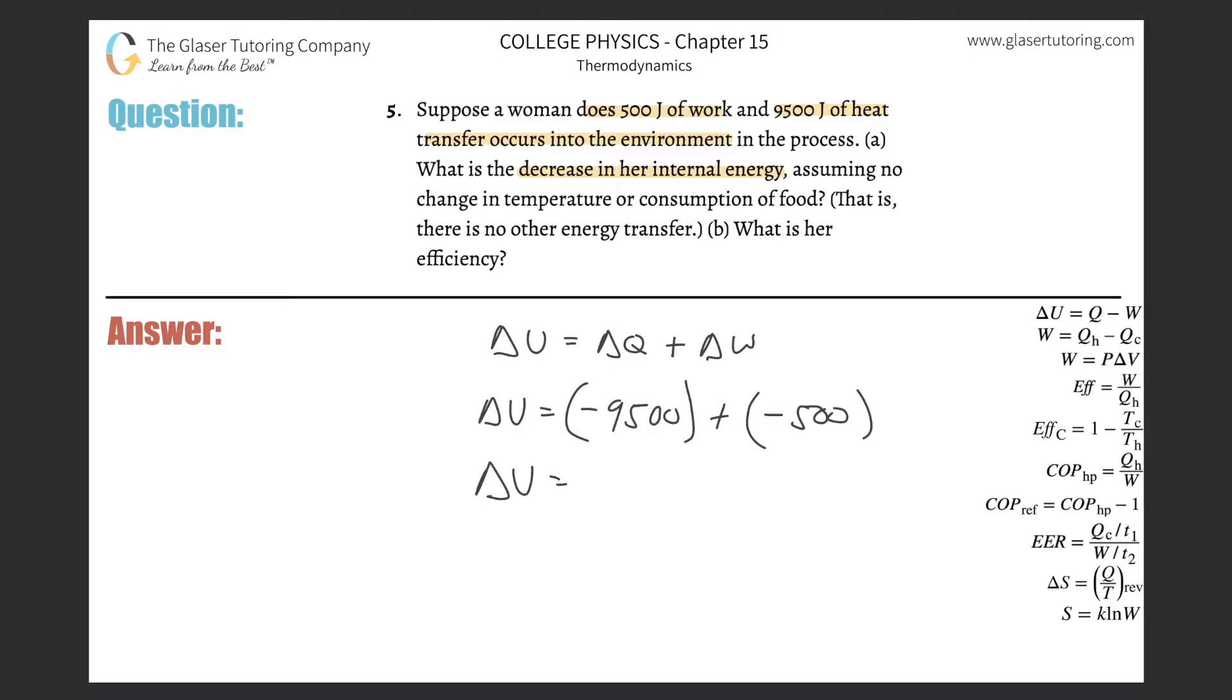So all we got to do is just add this together. Negative 9,500 minus 500. Why did I need a calculator for that? I don't have any idea. It's obviously 10,000. So that's in terms of joules. That's what happens when you rely on it too much. So that's her internal change in energy. She literally lost, she has lost 10,000 joules.